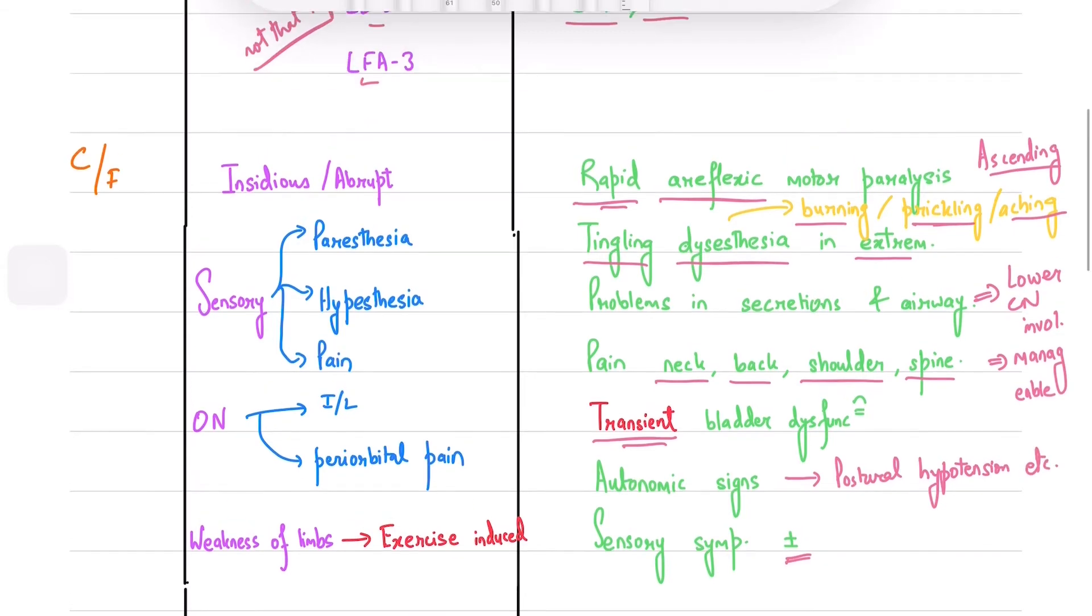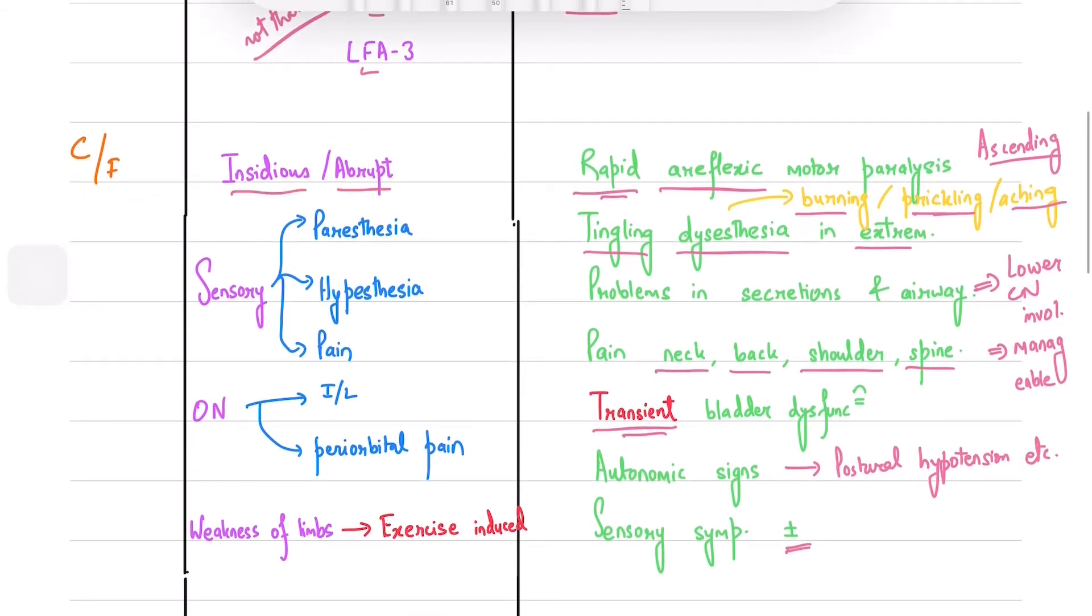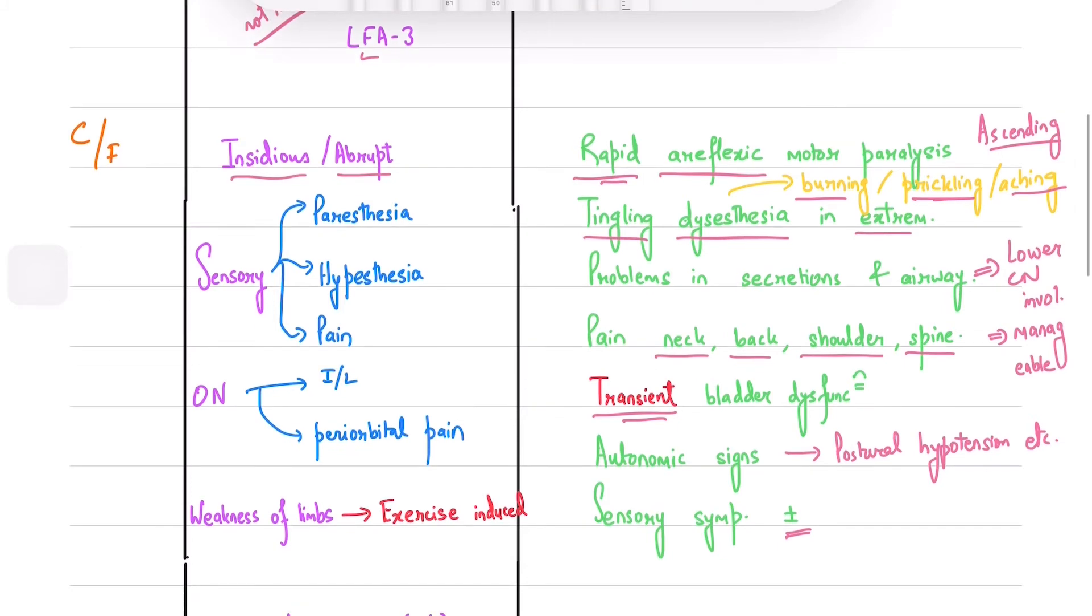MS can be insidious or abrupt onset. Symptoms can be severe or very trivial where the patient may not even go to a doctor for checkup. You should check for sensory symptoms like paresthesias which include tingling, prickling sensation, formications, pins and needle feeling, or painful burning.